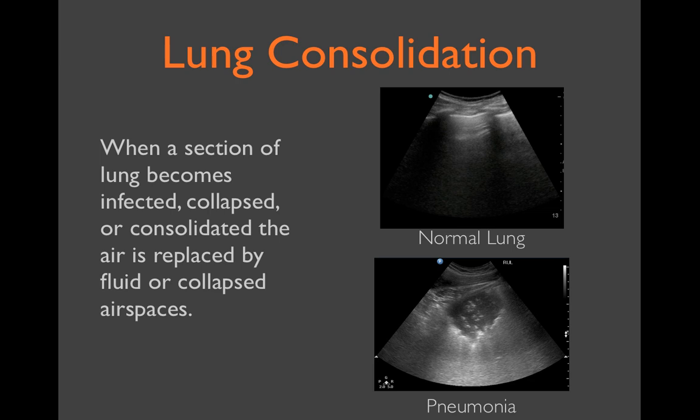However, when air is removed from a section of lung and the air spaces are either collapsed or filled with fluid, the deaerated lung parenchyma produces a tissue image that is easily identifiable with ultrasound. Here we see normal lung tissue in the top picture, but in the bottom image we see a focal area of consolidation with normal aerated lungs surrounding it. This represents a small right upper lobe pneumonia.